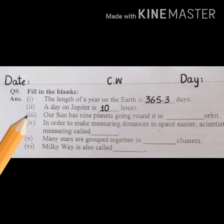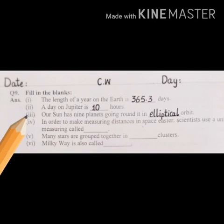Number 3. Our sun has nine planets going round it in dash orbit. Our sun has nine planets going round it in elliptical orbit.